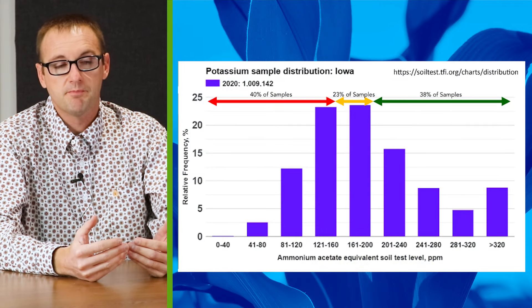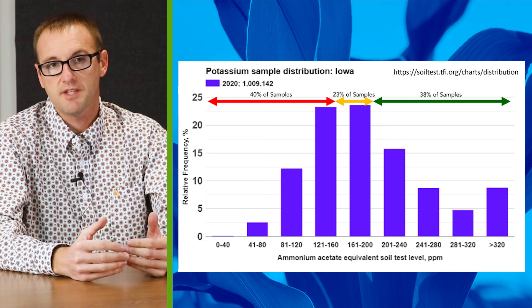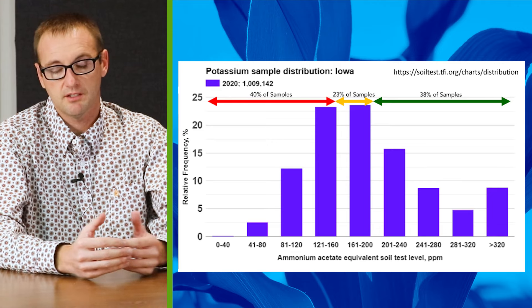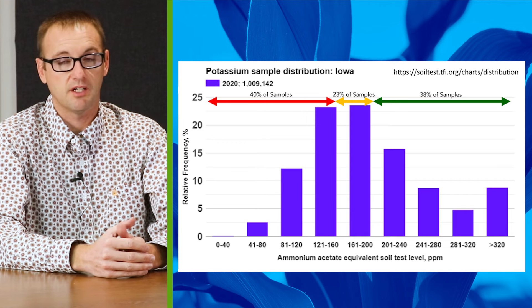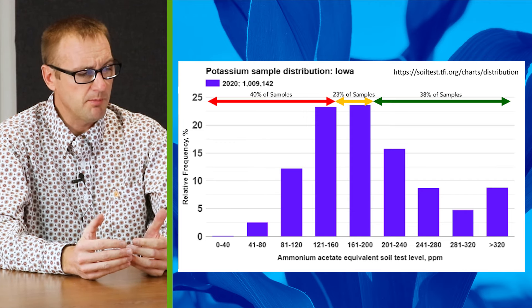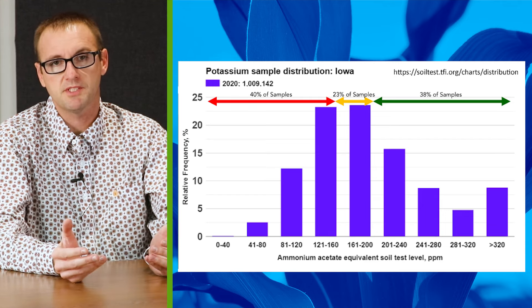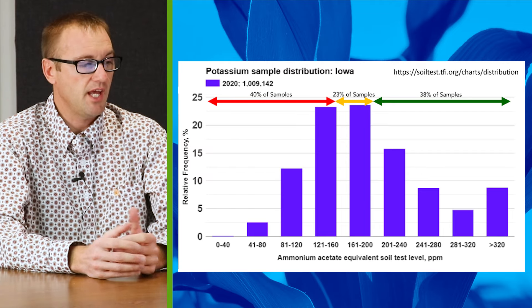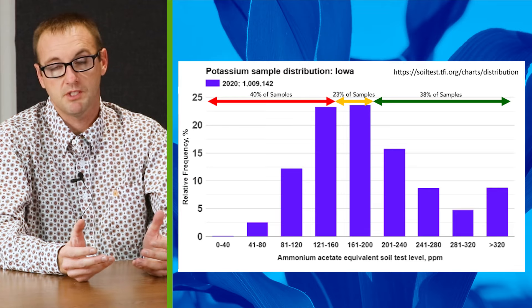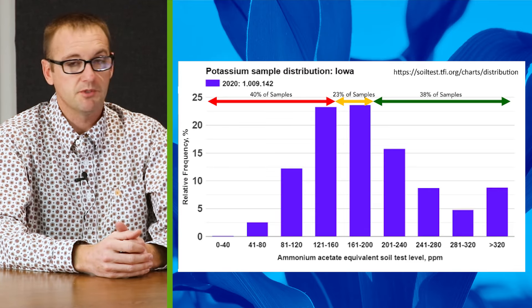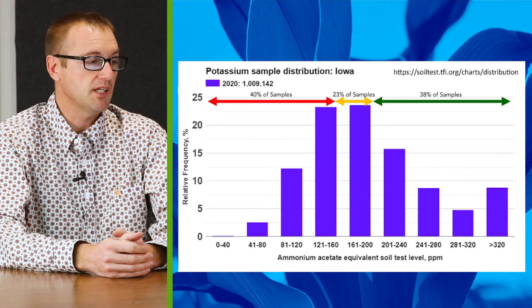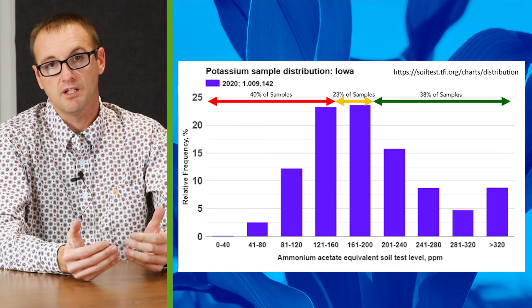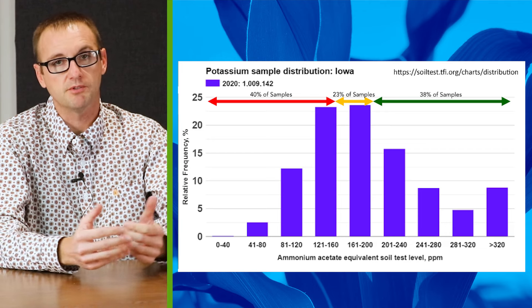But the question is: could we be more strategic about it? Are there ways to get around having to build and maintain on every acre? The next figures show large soil test data sets originally put together by the International Plant Nutrition Institute, now housed by the Fertilizer Institute. This is the distribution of all soil test potassium for all soils tested in the state of Iowa. 38% of those samples were above 200 parts per million, meaning they're probably in good shape. 23% were in the zone where nutrients need replacing. But 40% of those one million samples were low to very low.